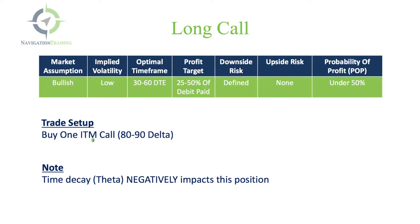We want to buy in the money calls, kind of in that 80 to 90 delta range, because that's going to minimize that theta decay component on the trade, meaning it's going to act more like buying stock, and it's not going to have that time decay working against us — a very minimal amount.